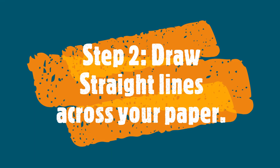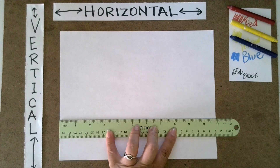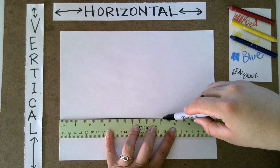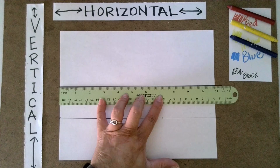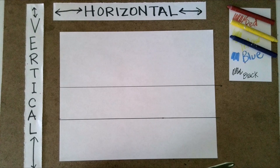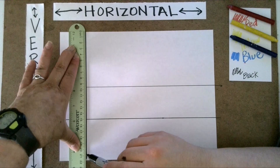In step two, we are going to draw straight lines across our paper using the ruler. The first line I'm going to make is a horizontal line. To make sure the ruler doesn't move while I'm drawing, I put my fingers spread out on the ruler and hold it down to the table. Once you do your first line, do another — make sure these lines don't touch and that they are both very straight.